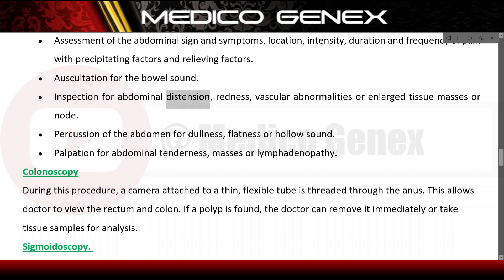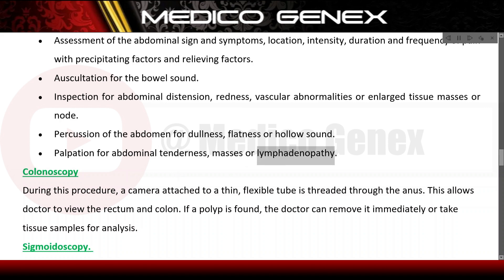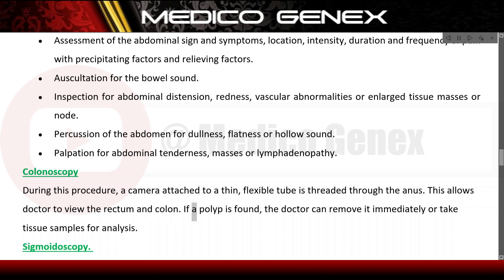Inspection for abdominal distension, redness, vascular abnormalities, or enlarged tissue masses or nodes. Percussion of the abdomen for dullness, flatness, or hollow sound. Palpation for abdominal tenderness, masses, or lymphadenopathy. Colonoscopy: during this procedure, a camera attached to a thin, flexible tube is threaded through the anus, allowing the doctor to view the rectum and colon. If a polyp is found, the doctor can remove it immediately or take tissue samples for analysis.